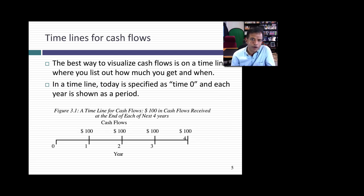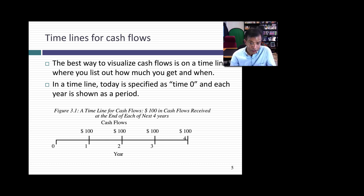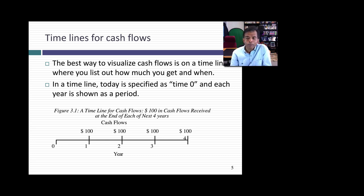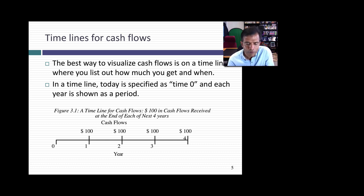A useful tool for making this adjustment is a timeline. You draw time as a line and show the cash flows at each point in time. For example, a timeline of $100 in cash flows at the end of each year for the next four years. When we talk about cash flows during a year, we need to specify where in the year — start, middle, end, or all through the year. Cash flows at the end of regular intervals like this are called an annuity.